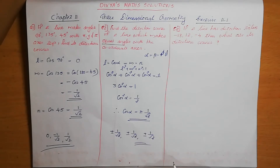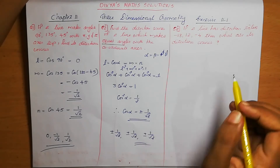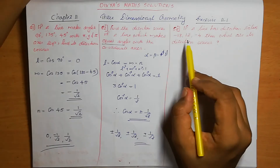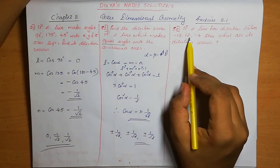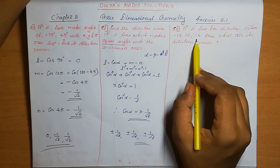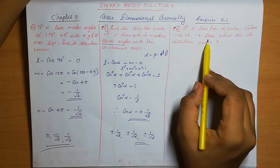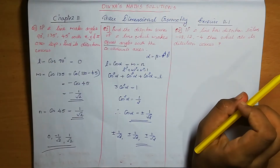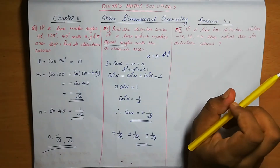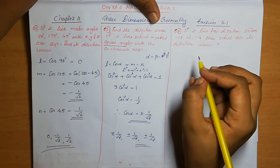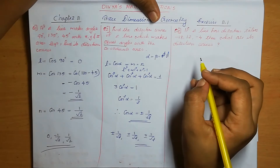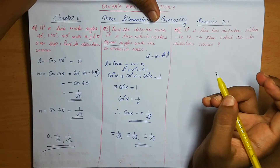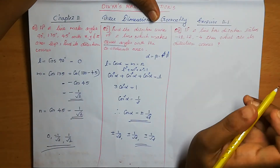Question number 3: if a line has the direction ratios minus 18, 12, minus 4, then what are the direction cosines? We need to find the direction cosines. The direction ratios are given as minus 18, 12, minus 4.